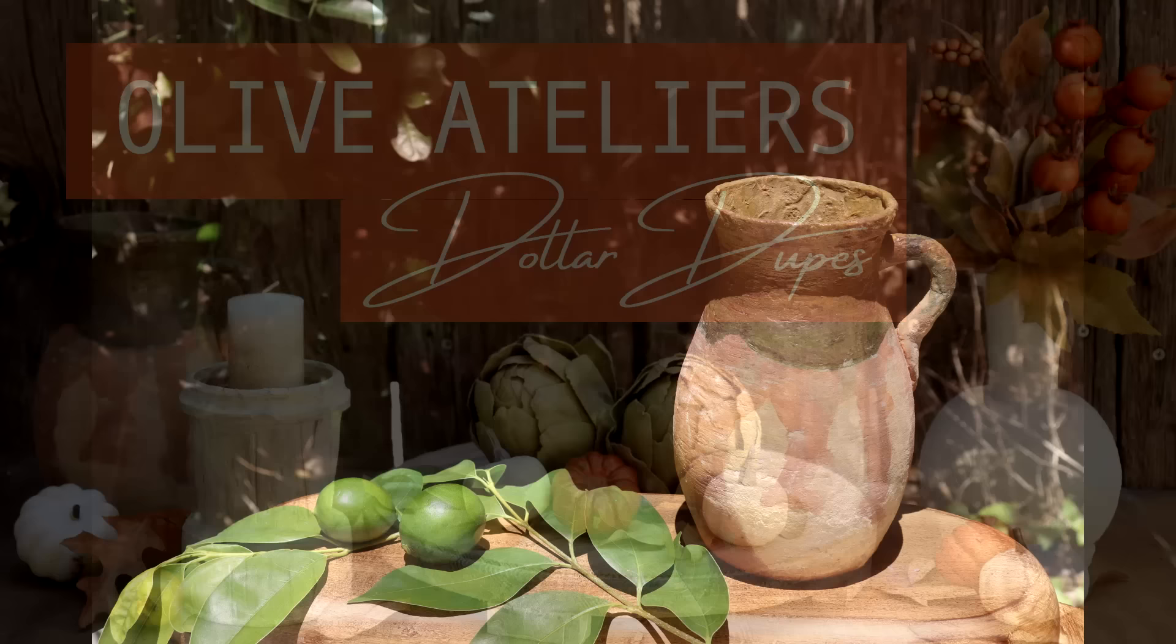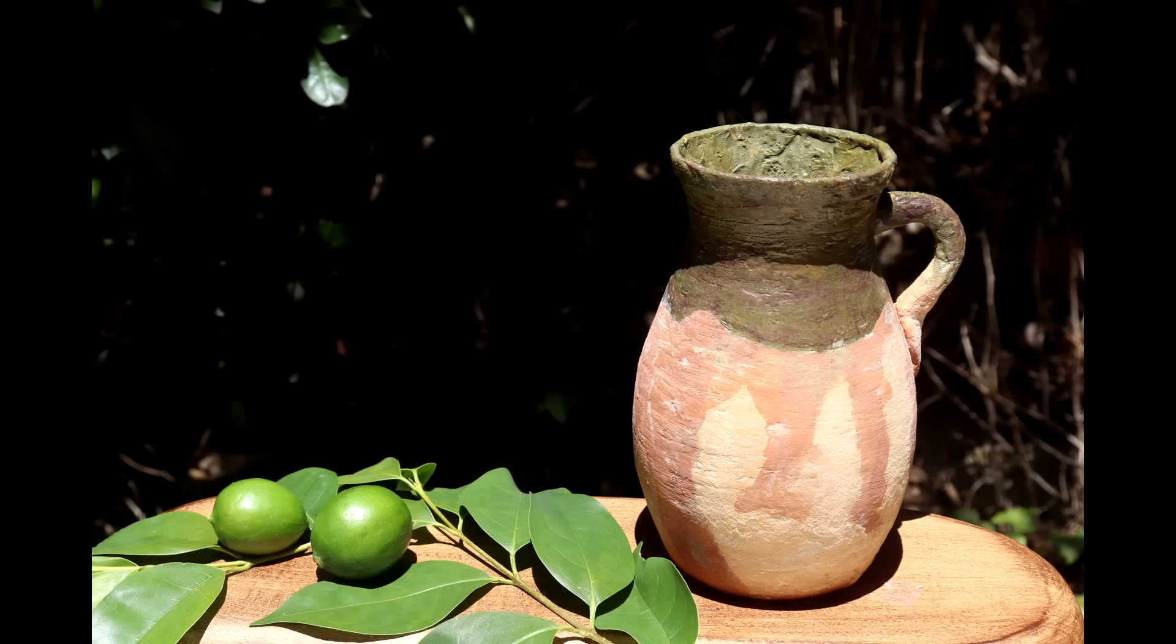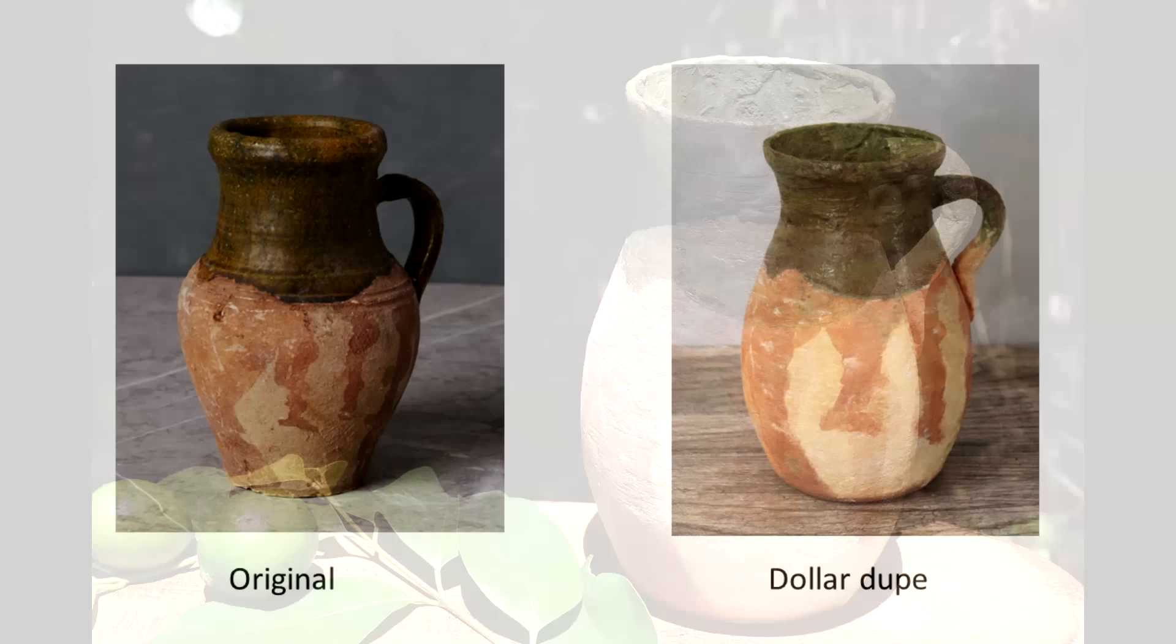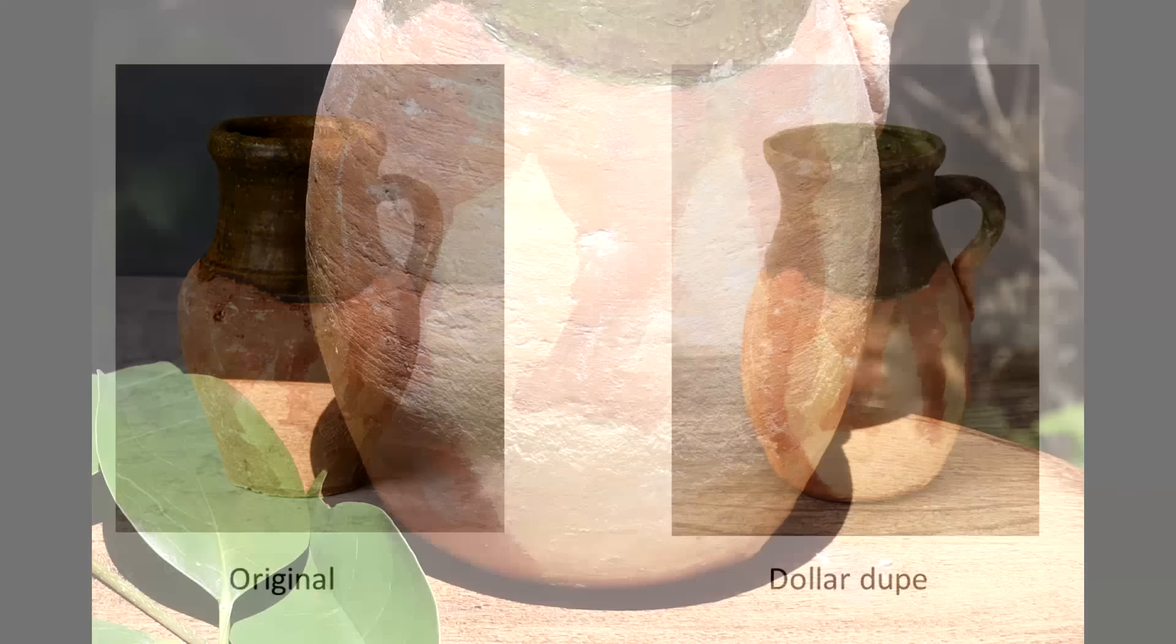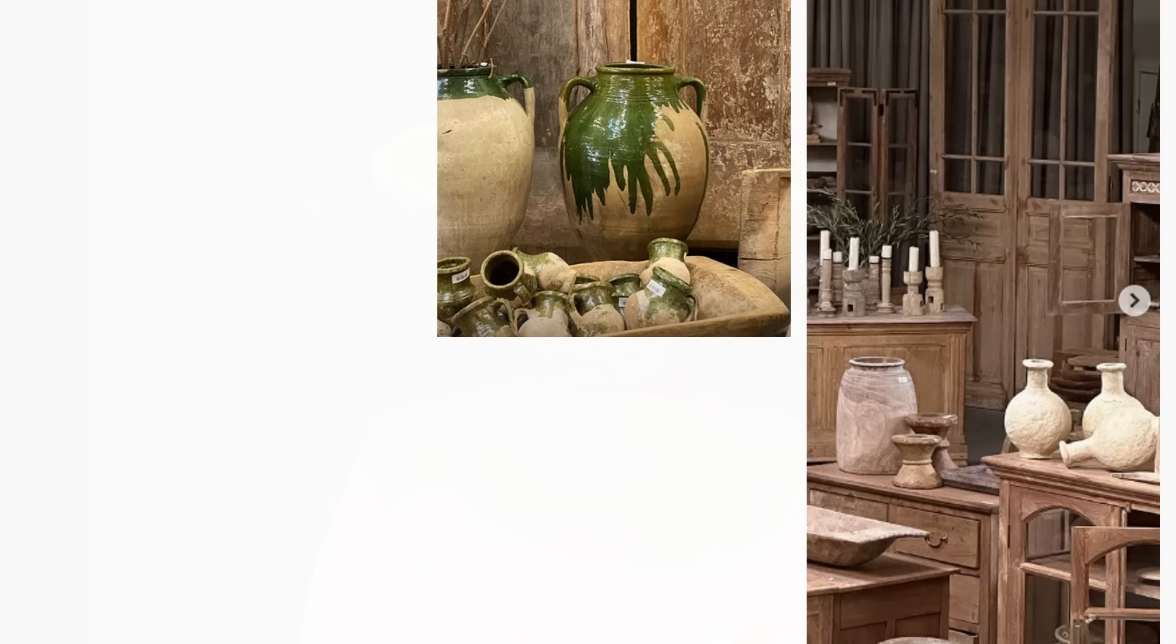This is actually part 2 of the Olive Atelier episode. In part 1 I focused on presenting a detailed dollar replica of a traditional Turkish olive jar with a drip finish and glazed top. I'll provide a link in the description if you haven't seen it, but as promised, in this week's video I will be duping a papier-mâché gourd, an aged wood candle holder, and an aged wood riser.